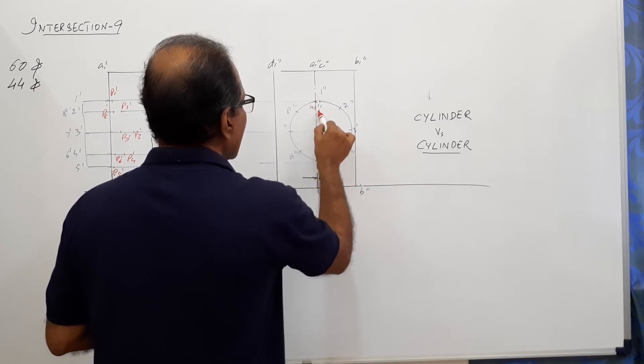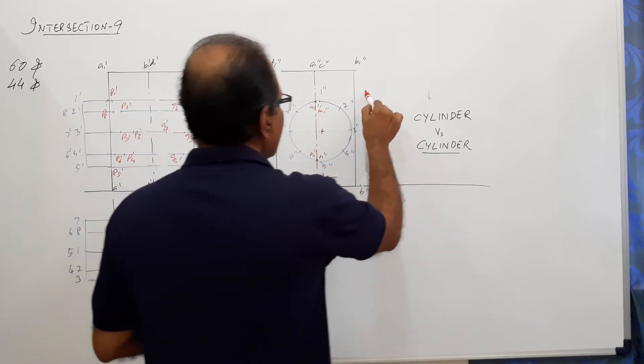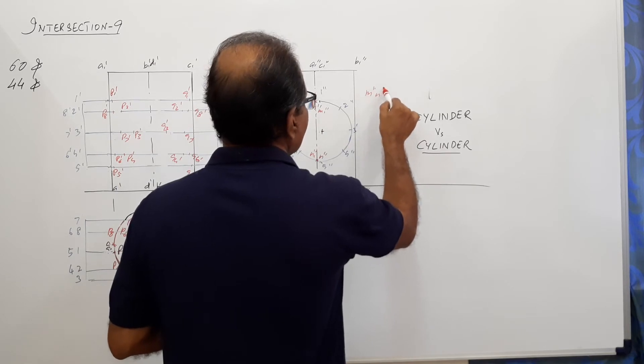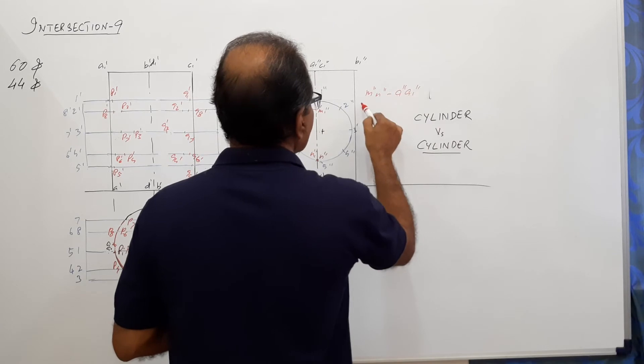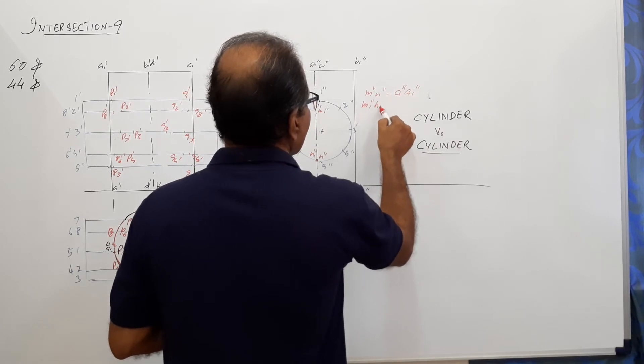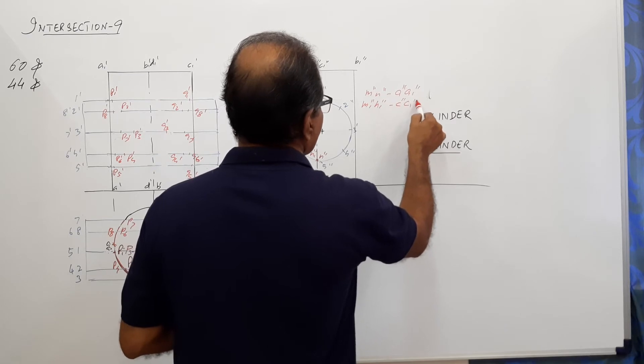I call this M double dash. And I call this N double dash. I call this also M1 double dash and N1 double dash. M double dash and N double dash on A double dash, A1 double dash. And M1 double dash and N1 double dash on C double dash, C1 double dash.